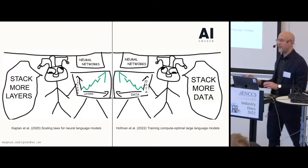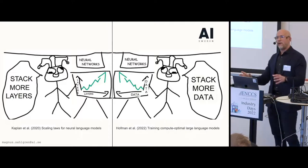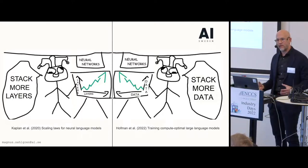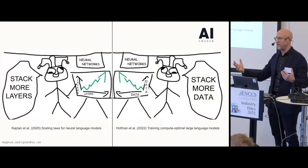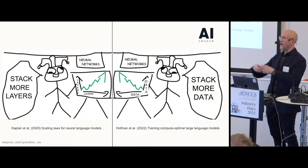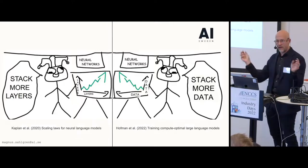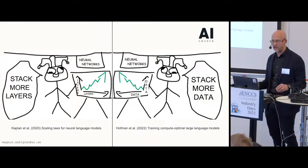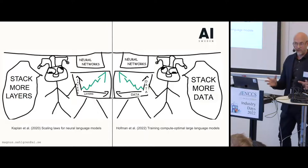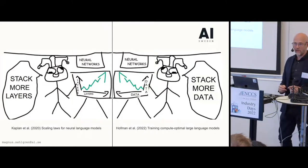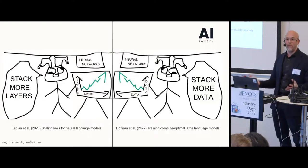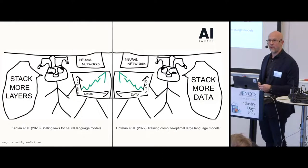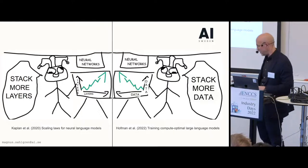So when we think about building something like this for Swedish, we're stuck between two different directions. One is just scaling up the model size — stacking more layers and adding parameters, which is essentially what GPT-3 did — or increasing the size of the training data, which is what the Chinchilla model did. Of course, we would like to do both: build a huge model trained on vast amounts of data.